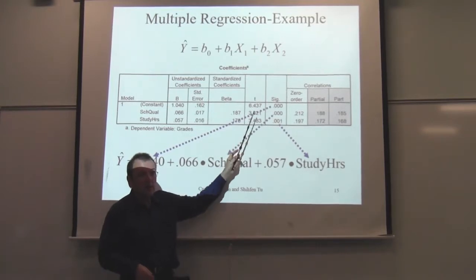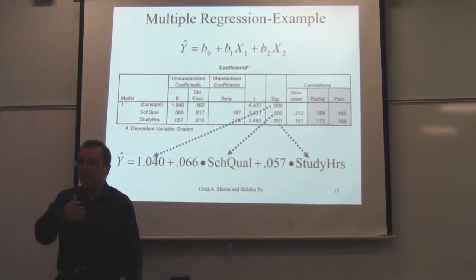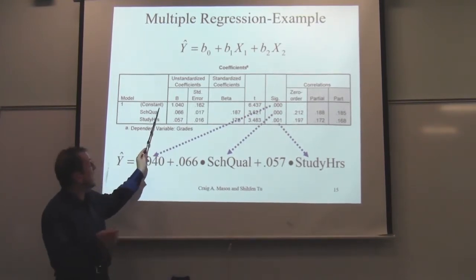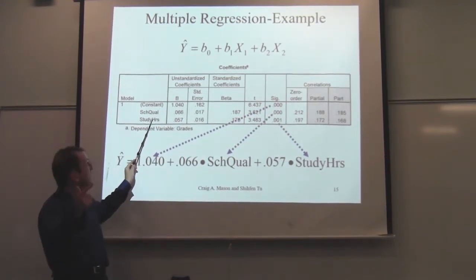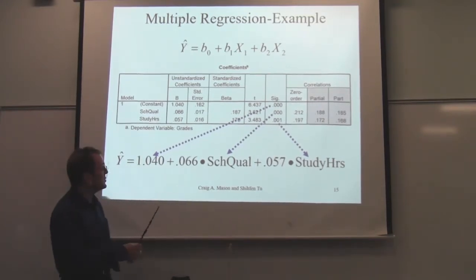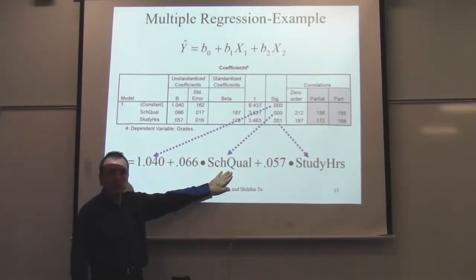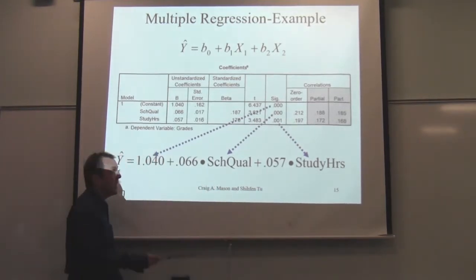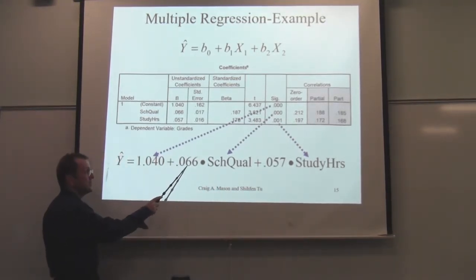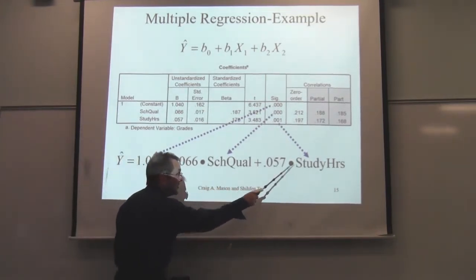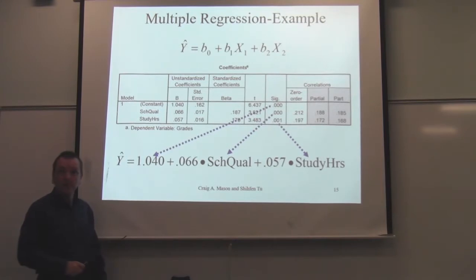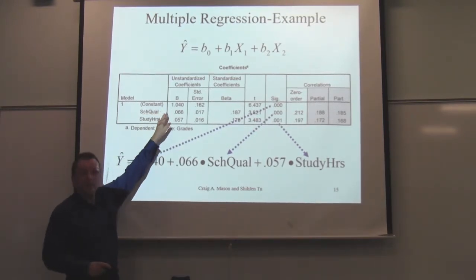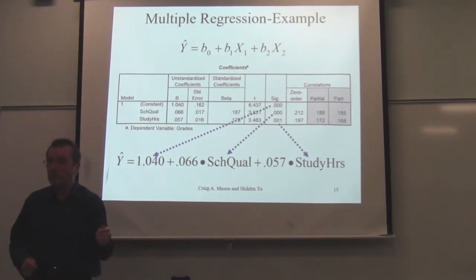That's what the t tells us: does this variable help predict? Is that a significant effect? Is this number equal to zero? Now, the constant's t-test is often ignored, because it asks: if school quality is zero and study hours is zero — meaning you're at a really horrible school and never study — your predicted GPA is 1.04 plus zero plus zero, which equals 1.04. The constant is the predicted outcome when all independent variables equal zero.